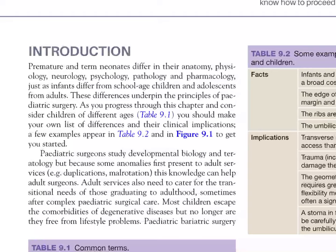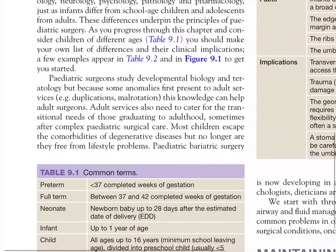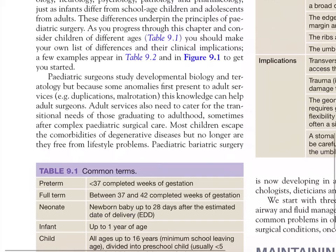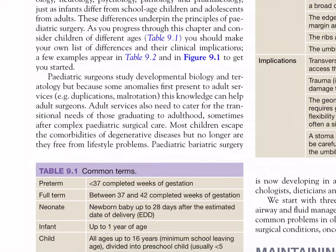As you progress through this chapter and consider children of different ages, you should make your own list of differences and the clinical implications. A few examples appear in Table 9.2 and Figure 9.1 to get you started. Paediatric surgeons study developmental biology and teratology, but because some anomalies first present to adult services — duplications, malrotation — this knowledge can help adult surgeons. Adult services also need to cater for the transitional needs of those graduating to adulthood, sometimes after complex paediatric surgical care.